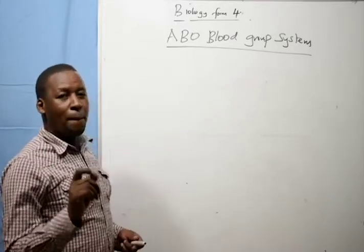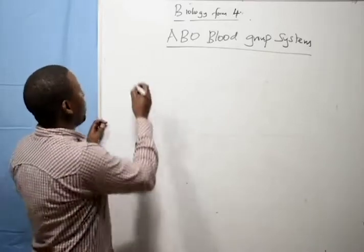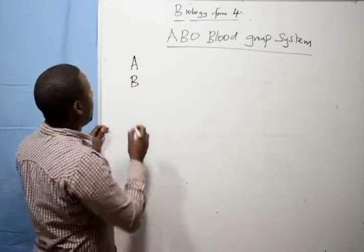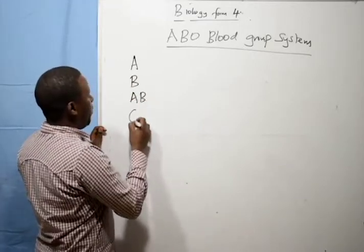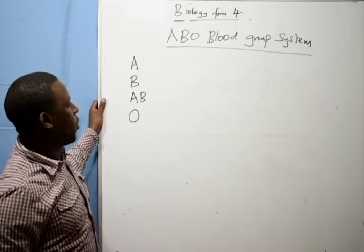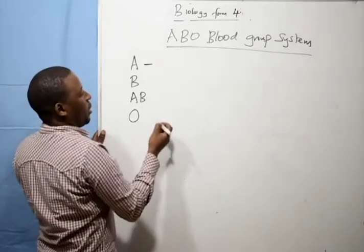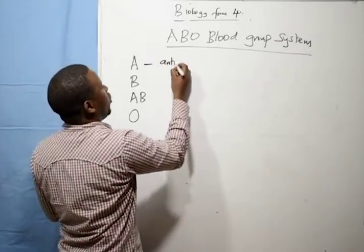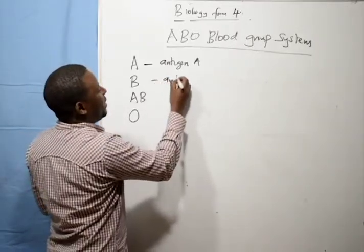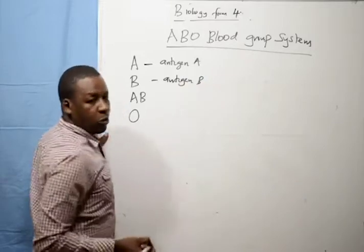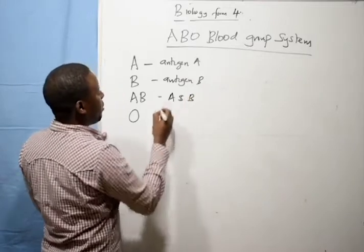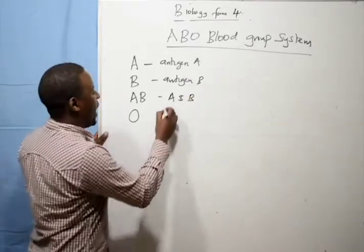There are 4 major blood group types: blood group A, blood group B, blood group AB, and blood group O. People with blood group A have antigen A, those with blood group B have antigen B, those with blood group AB have antigen A and antigen B, and those with blood group O have no antigen.